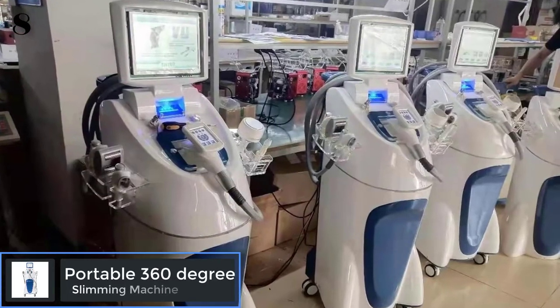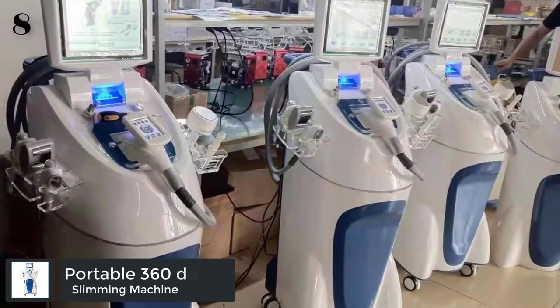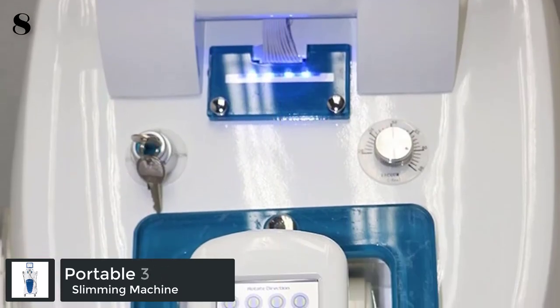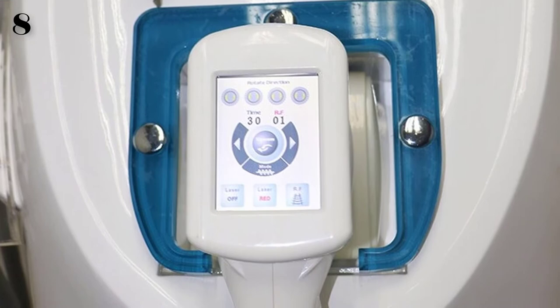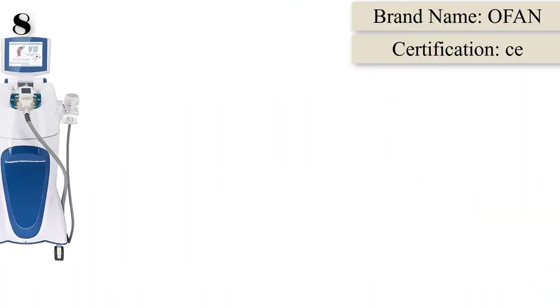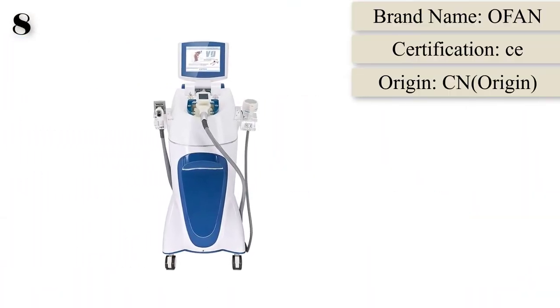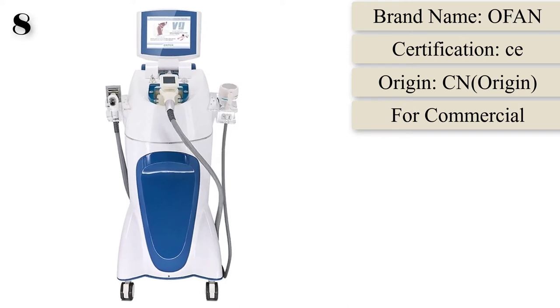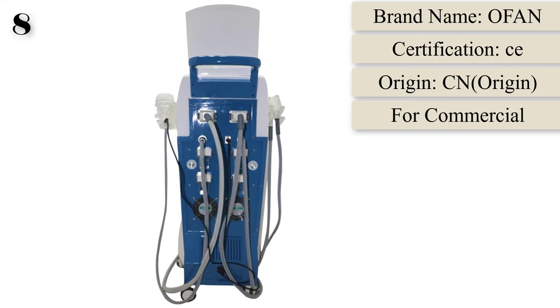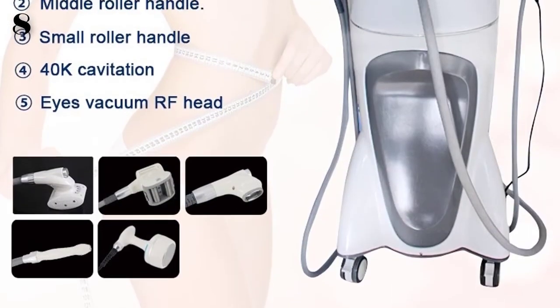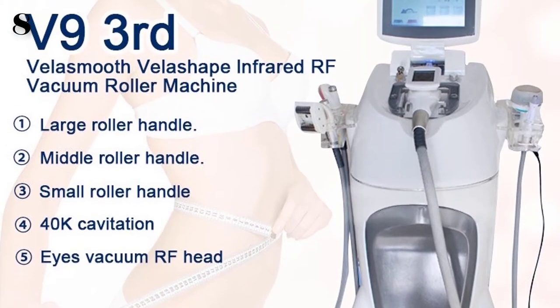Number 8: LPG Vela Shape Vacuum Roller Machine Vacuum Body Anti-Cellulite Body Slimming Skin Tightening Cavitation Beauty Spa Massager V9. Brand Name: Othin. Origin: CN. Item Type: Massage and Relaxation. Certification: CE. Application: Body. Material: ABS and TPR. Size: Large.